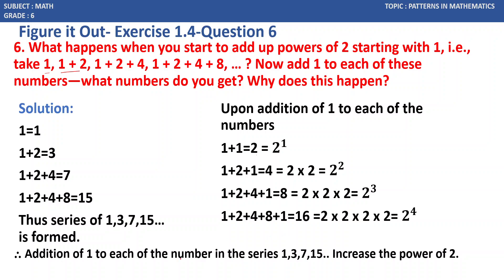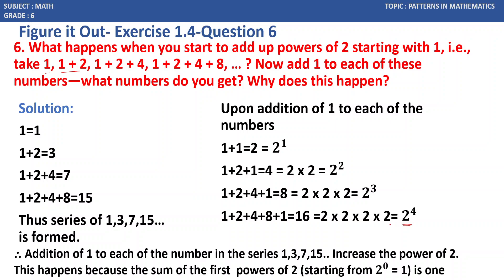Adding 1 to each of the numbers in the series 1, 3, 7, 15 gives powers of 2: 2 power 1, 2 squared, 2 cubed, and 2 power 4. This happens because the sum of the first powers of 2 starting from 2 power 0 is always 1 less than the next power of 2. So 3 is 1 less than 4, 7 is 1 less than 8, and 15 is 1 less than 16.